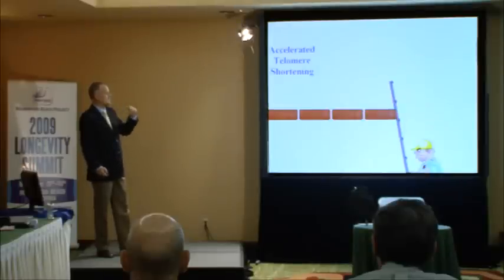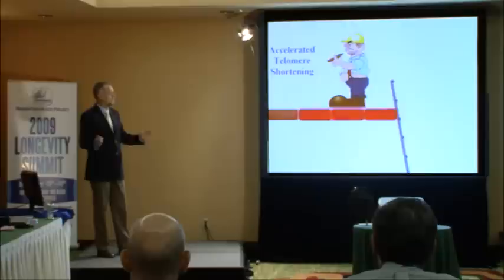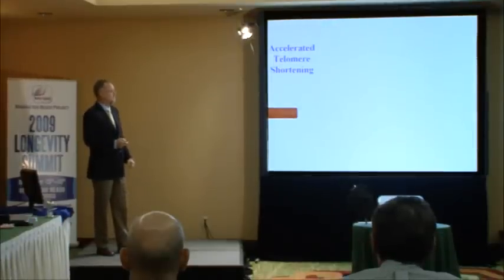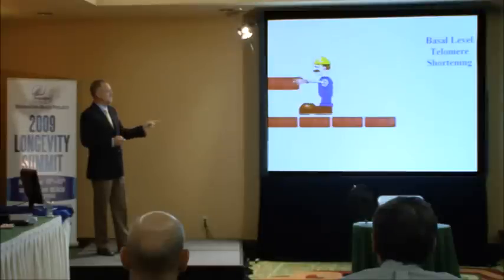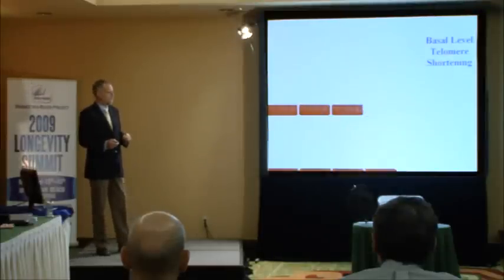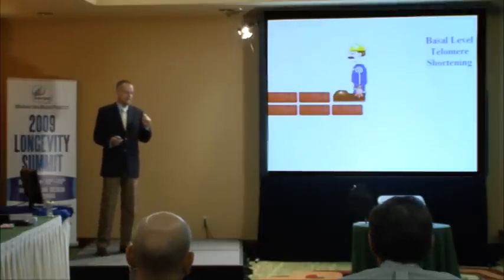I call this accelerated telomere shortening, which we can control. I recommend everybody live as healthy a lifestyle as possible, so that you're around when cures for aging arrive. But there's still nothing that can control this basal level of telomere shortening — and that's what my company is trying to work on. Even if this isn't the sole cause of aging, our lifespans are clearly limited by the length of our telomeres, and so something has to be done to solve telomere shortening.